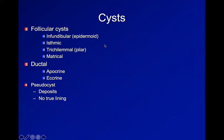For cysts, we're going to cover mostly follicular cysts. We're going to march down the different areas of the follicle, including the infundibular portion, which give rise to epidermoid-type cysts, the isthmic area, the trichilemmal area, which are also known as pilar cysts, and the matricle portion of the follicle. And then there are ductal cysts and pseudocysts, in addition to deposits.